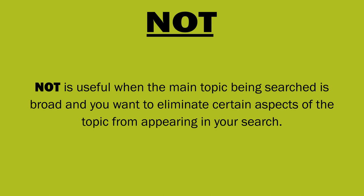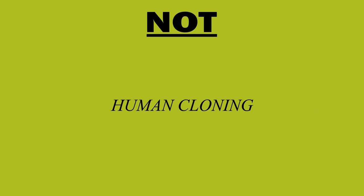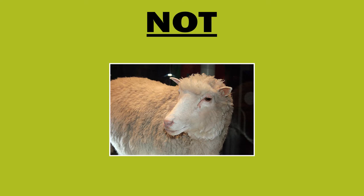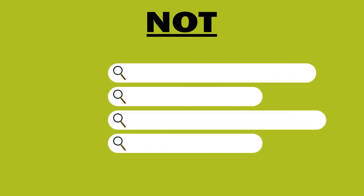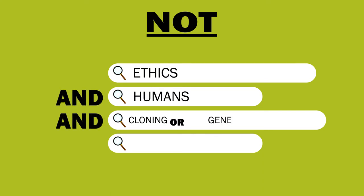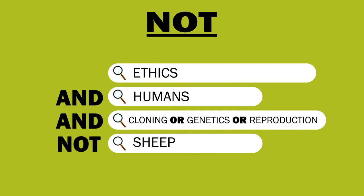The next Boolean operator is NOT. NOT is useful when the main topic being searched is broad and you want to eliminate certain aspects from appearing in your results. For example, if you want to look at human cloning but want to exclude other species — like Dolly the sheep — the search might look like: ethics AND humans AND cloning OR genetics OR reproduction NOT sheep. This tells the search engine to ignore anything that includes sheep as a keyword.